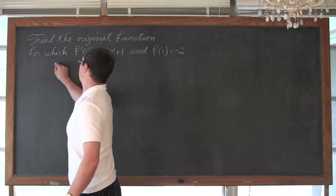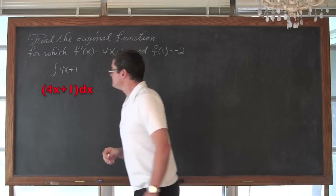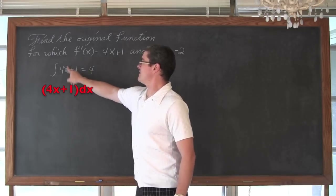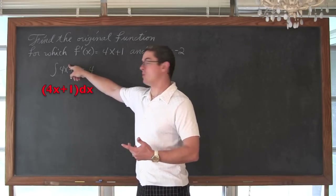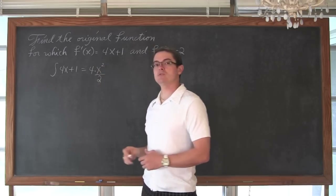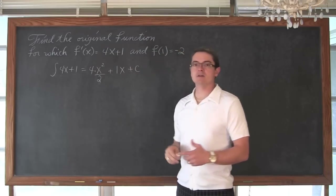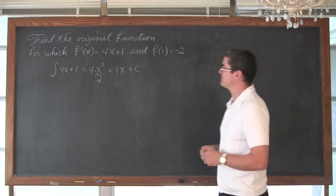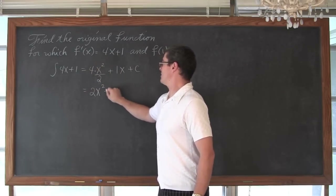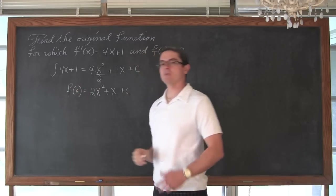We have the integral of 4x plus 1. We are going to take that exponent of 1 and increase it by 1, so we have 4 times x squared divided by 2, plus 1 times x, plus C, because we are finding the general solution. So 4 divided by 2 gives us 2x squared plus x plus C, and this is f of x, our antiderivative.